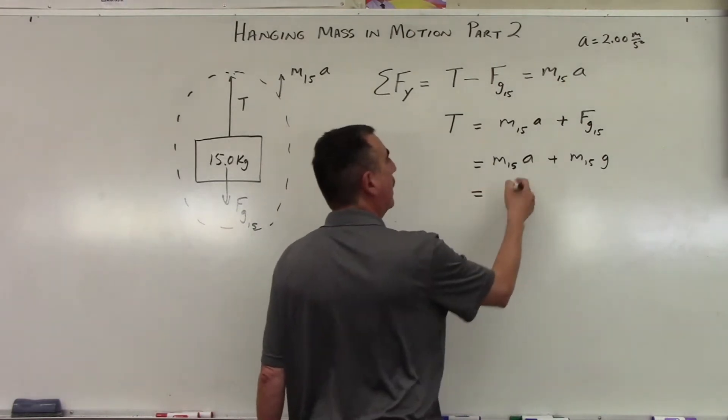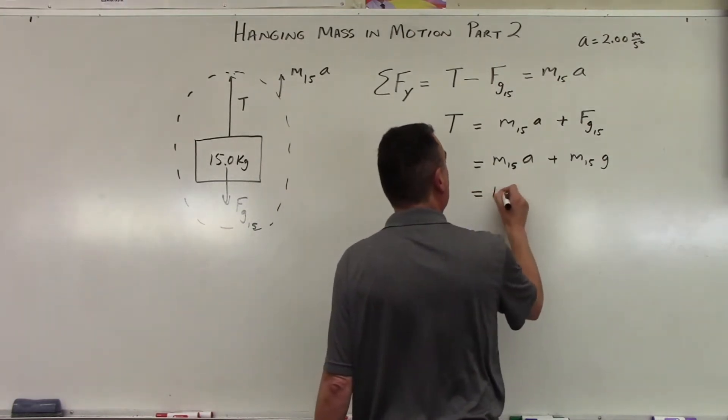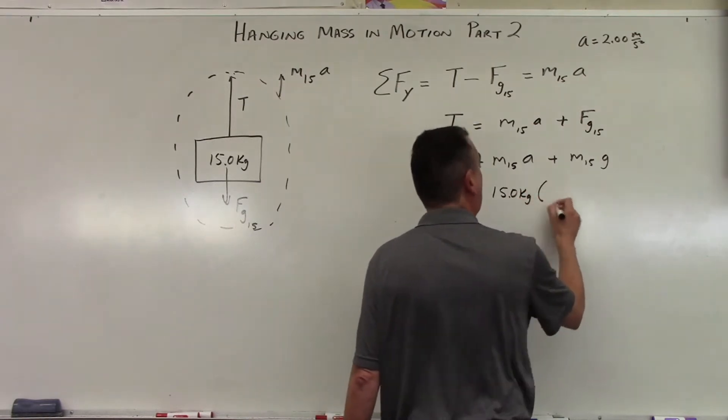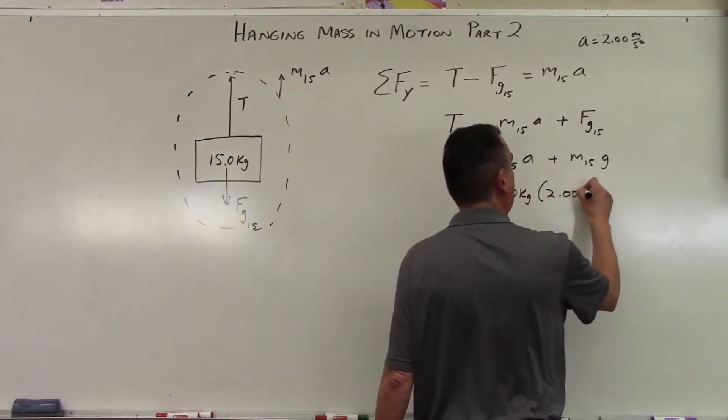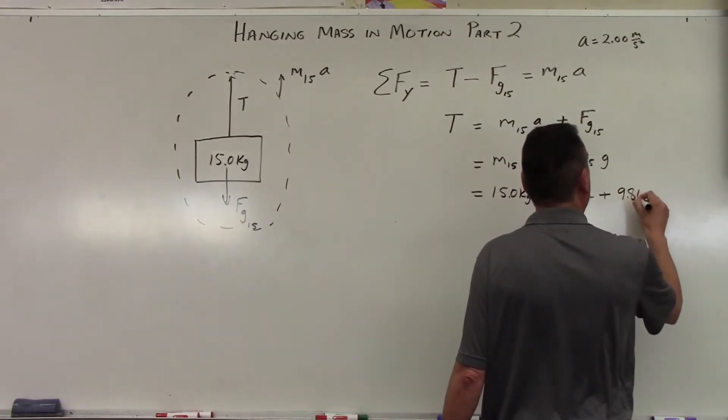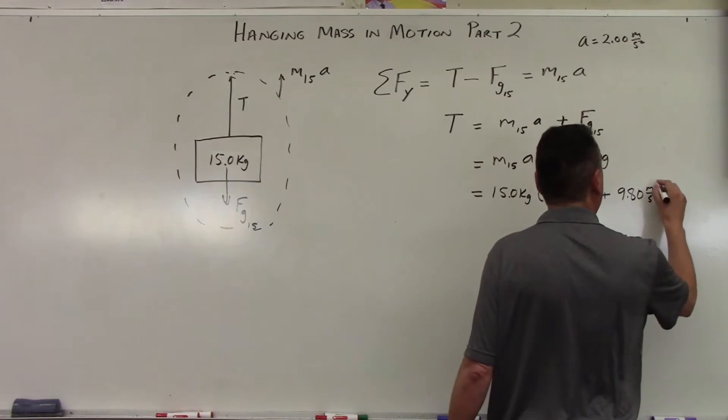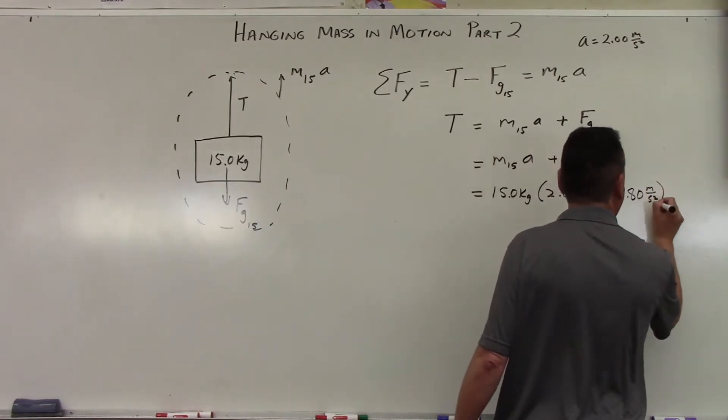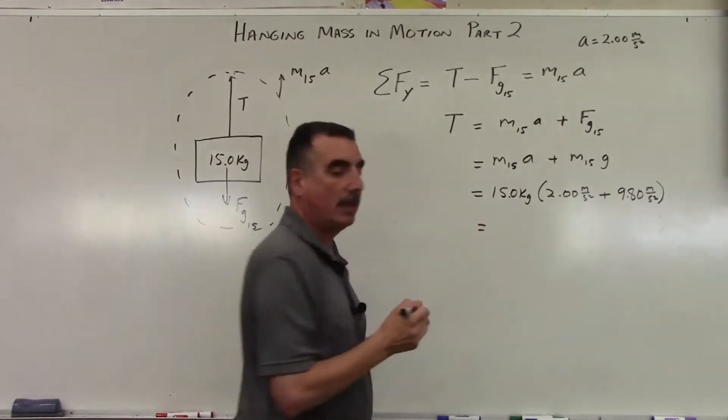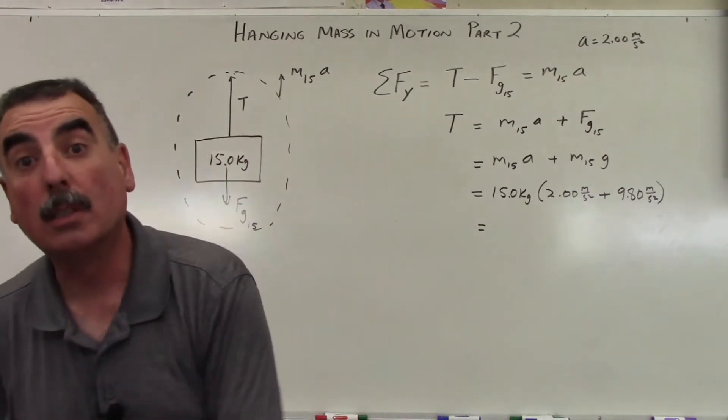So 15 times a plus mass of 15 times g. I'm going to factor out the 15. So this is going to be 15.0 kilograms times the 2.00 meters per second squared, plus 9.80 meters per second squared, the acceleration here on planet Earth.